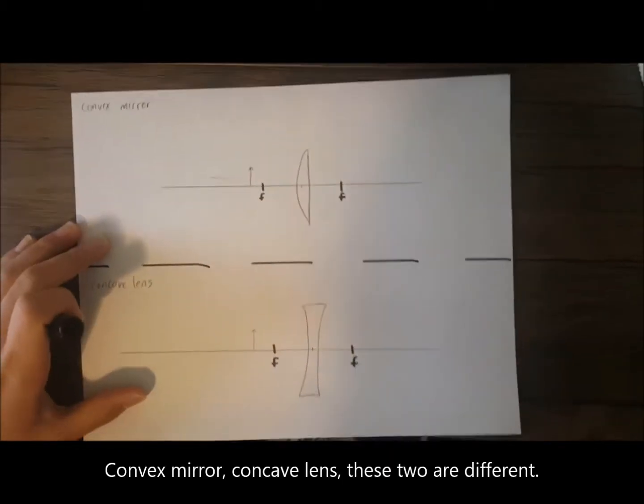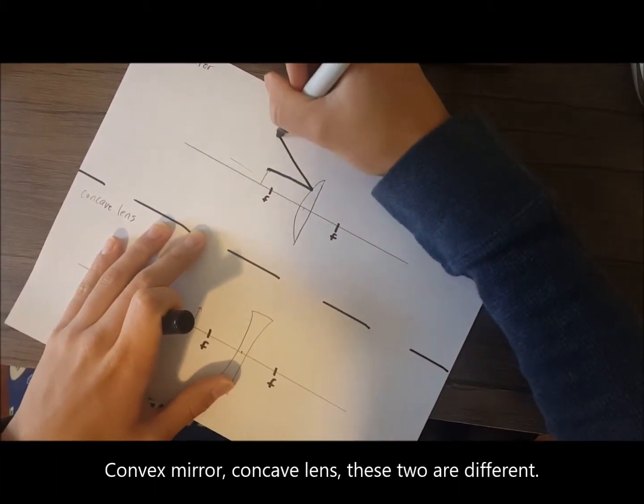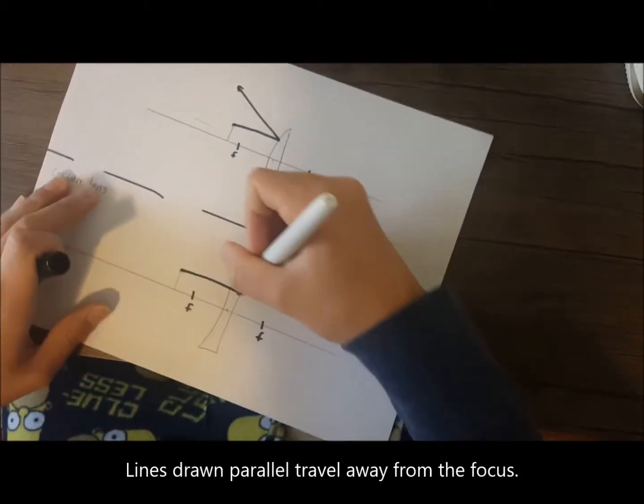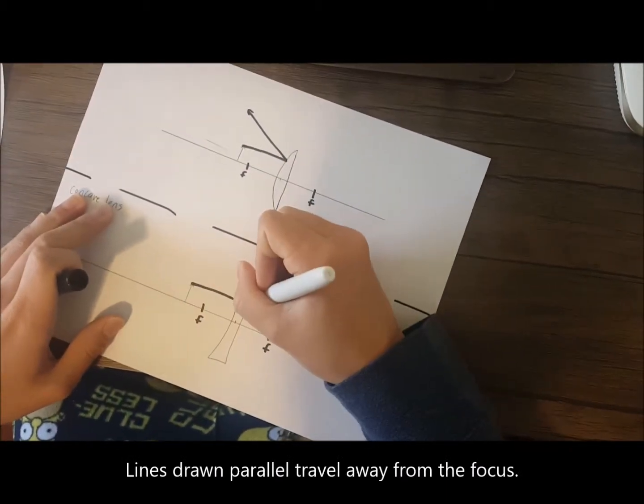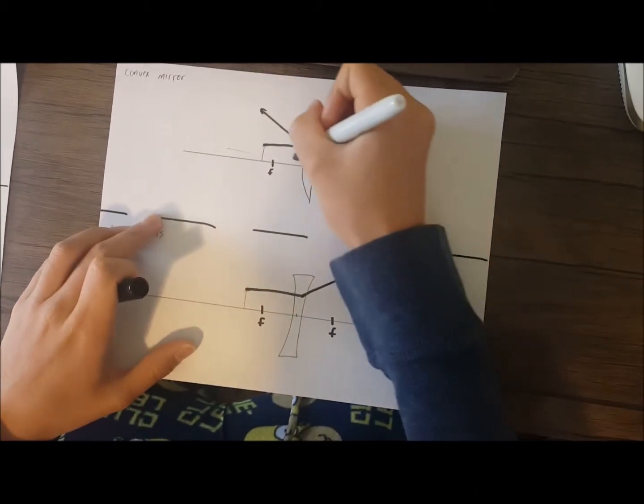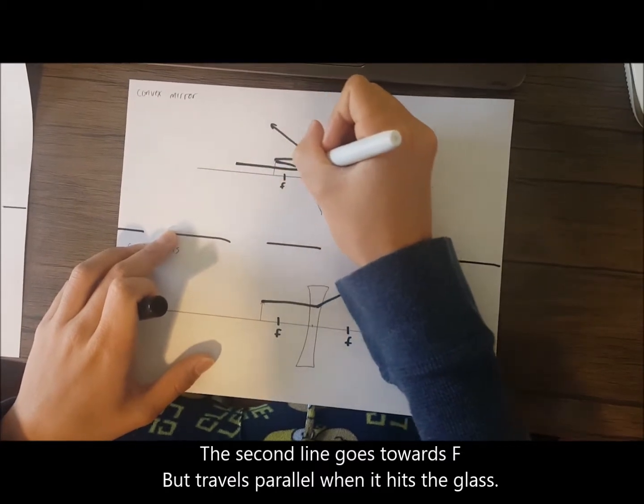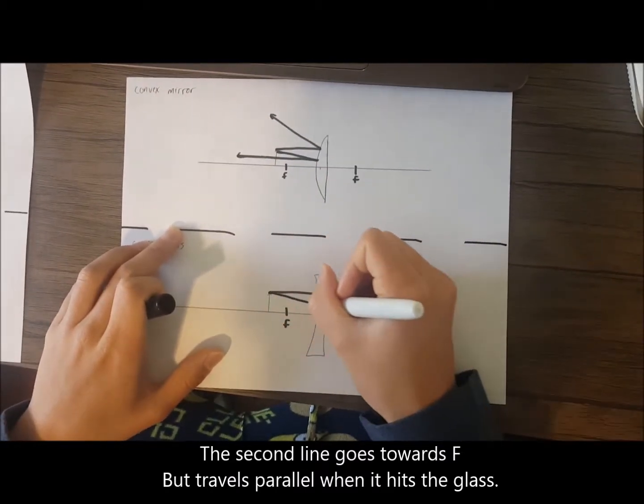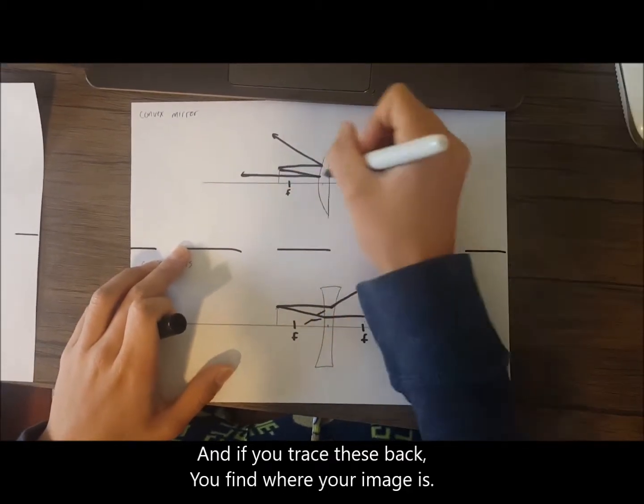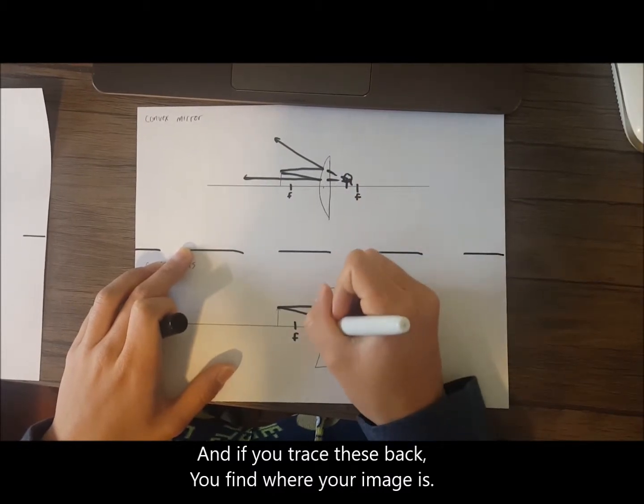Convex mirror, concave lens, these two are different. Lines drawn parallel travel away from the focus. The second line goes towards f, but travels parallel when it hits the glass. And if you trace these back, you'll find where your image is.